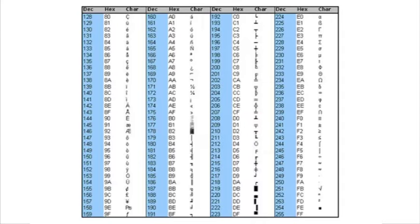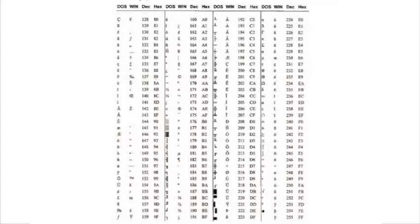ASCII Code has a number of disadvantages. The main disadvantage is that it does not represent characters in non-Western languages, for example, Chinese characters. As can be seen in this figure, DOS and Windows use different characters for some ASCII codes. For this reason, different methods of coding have been developed over the years.